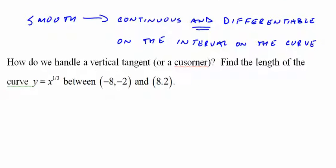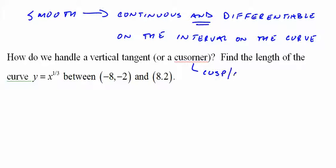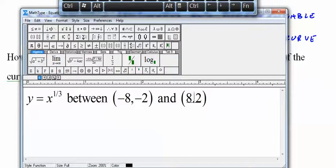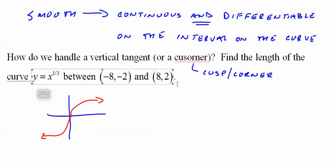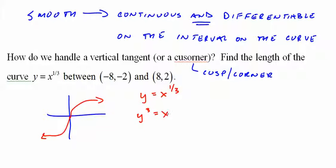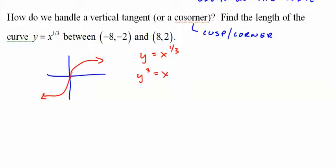So how about a vertical tangent or a cusp or corner? Well, we'll start with the vertical tangent. y equals x to the 1/3. Looks something like this. And if we go from negative 8 to 8, that should be a comma setting. We're covering a 0, so we can't do that. We can't take that derivative in the middle. It's going to cause us some problems. So here's what we do. y equals x to the 1/3, y to the 3rd equals x. And now we can do it.